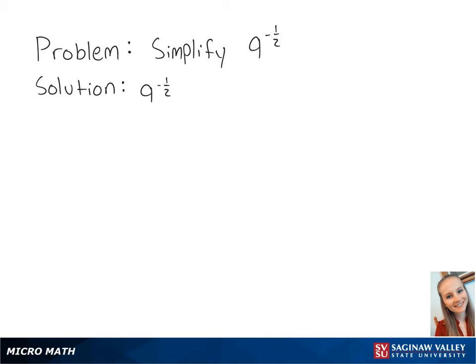Let's simplify 9 to the negative half power. Any negative exponent becomes positive when put in the denominator. This gives us 1 over 9 to the half power.